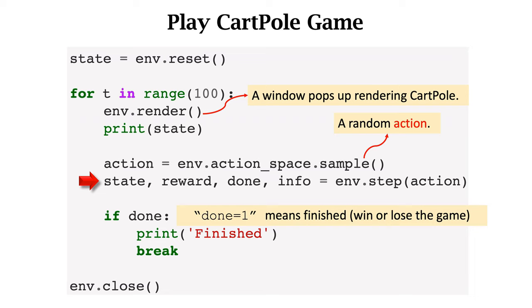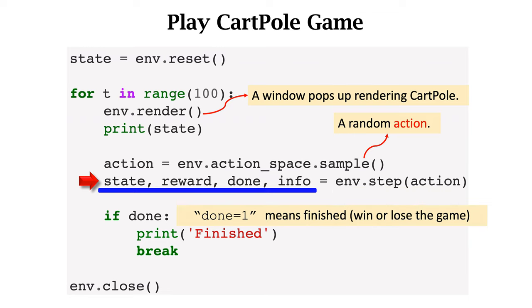Next, the agent executes the action. Using the function env.step, we tell the environment that this action is executed. The environment will return the new state, reward, done, and info. Here, done means whether the game has ended after this iteration. If done is true, it means we either won or lost the game, so we break the for loop. If the game has not ended, we continue to the next loop.